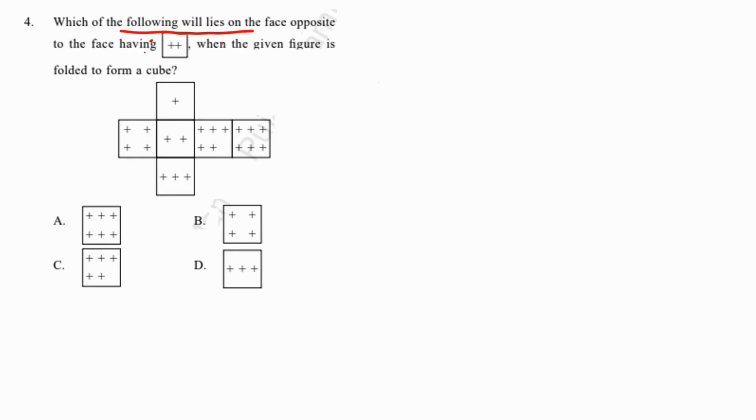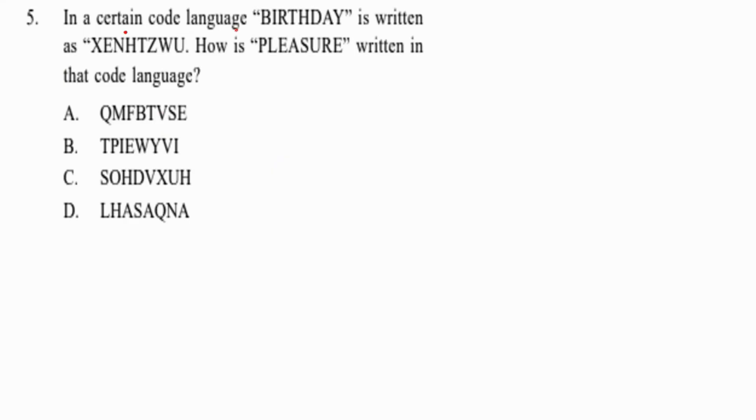Which of the following will lie on the face opposite to the face having two positive symbols when the given figure is folded to form a cube? This is a question from cubes and dice. In the unfolded form, we should pair up the alternates. One is paired with three, four with five, so our required two should be paired with six. Option E, six symbols, is our answer.